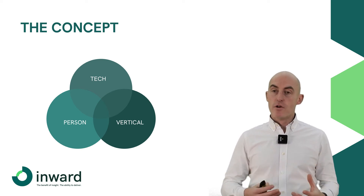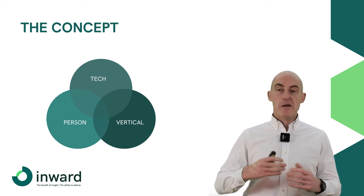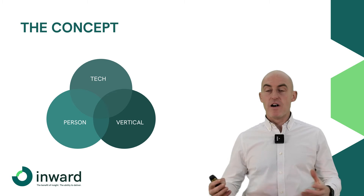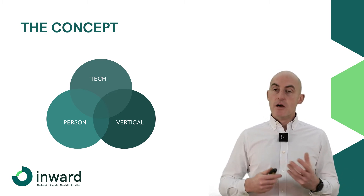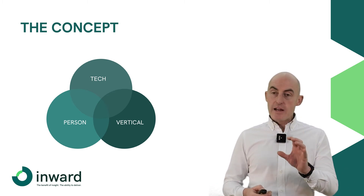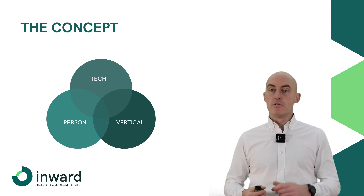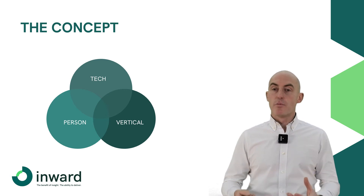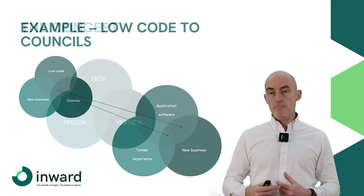And then lastly, what vertical do you want somebody to have sold into? Public sector, finance, retail, manufacturing, whatever it might be. The shaded area in the middle of those three circles — that's what the brief looks like, and that's how big your cohort is.